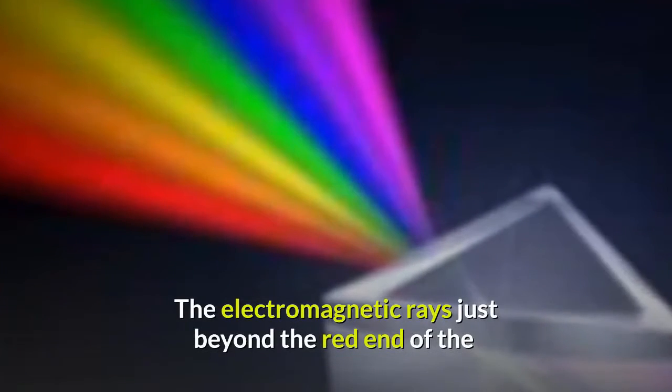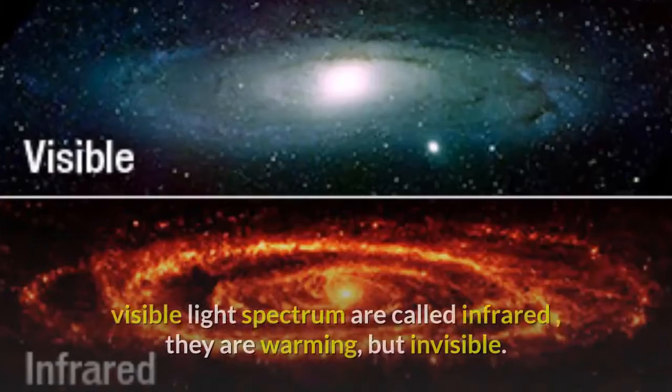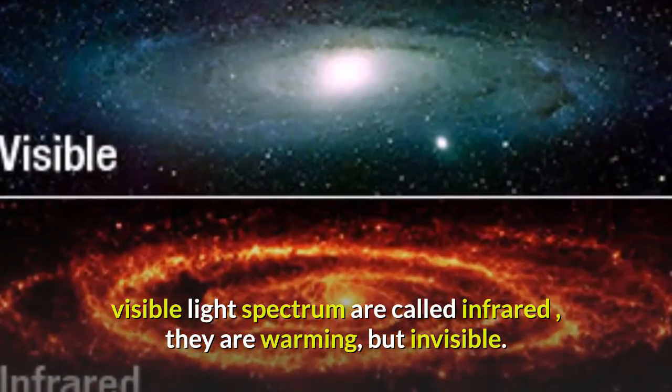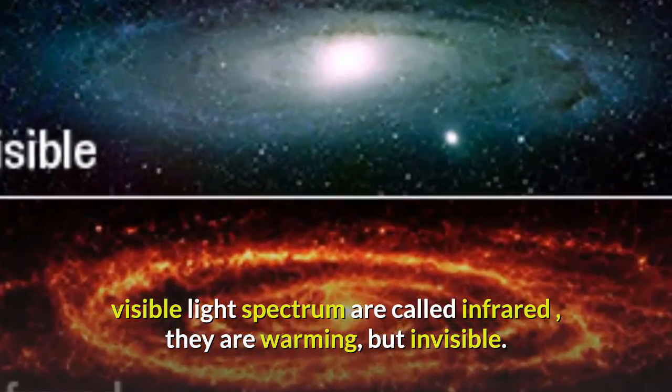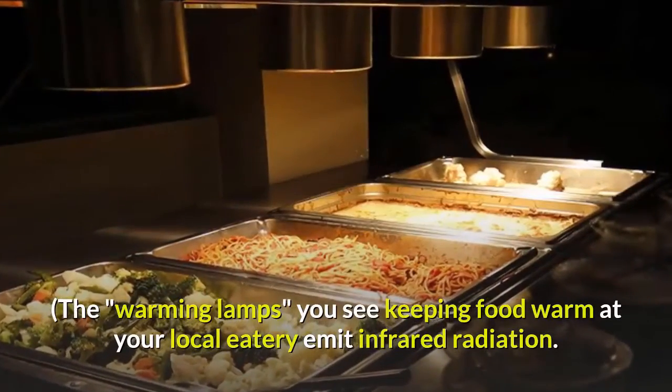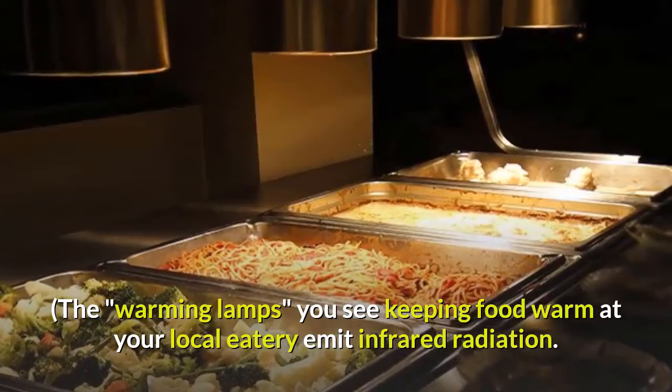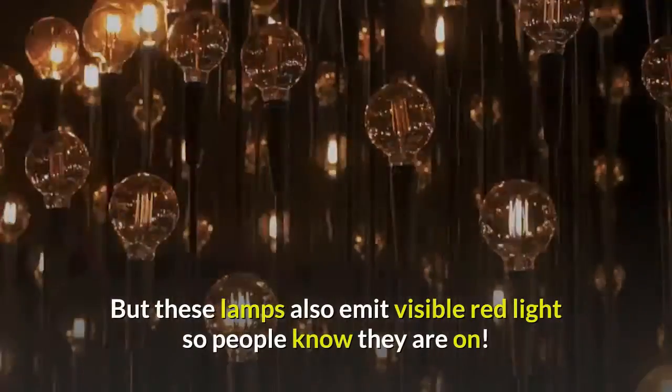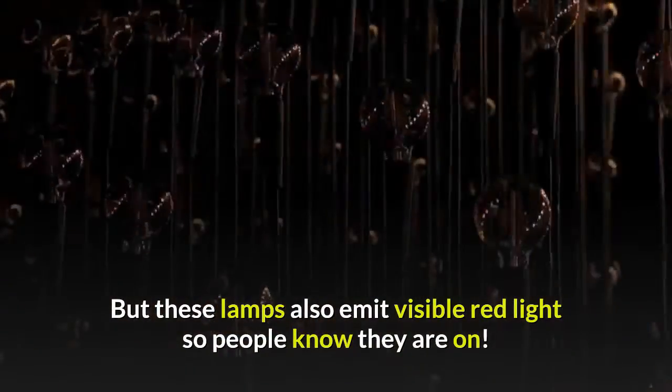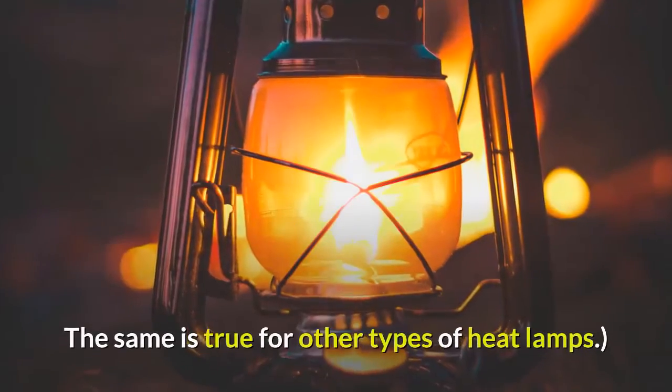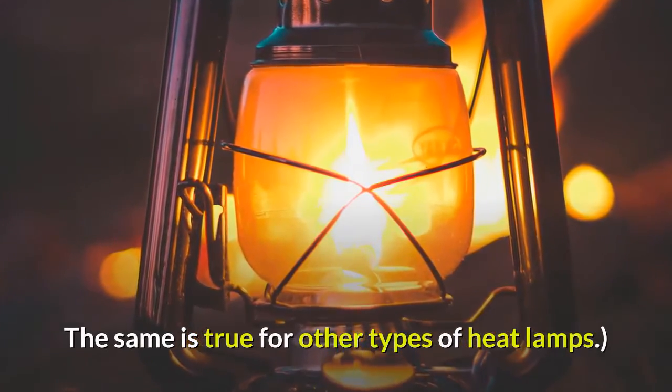The electromagnetic rays just beyond the red end of the visible light spectrum are called infrared. They are warming but invisible. The warming lamps you see keeping food warm at your local eatery emit infrared radiation, but these lamps also emit visible red light so people know they are on. The same is true for other types of heat lamps.